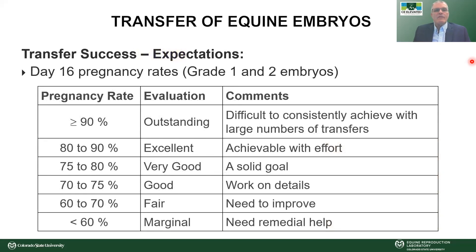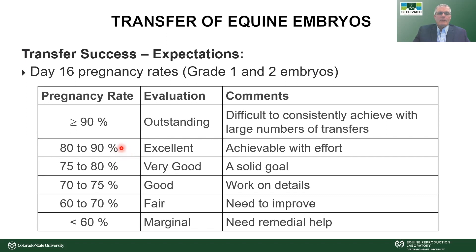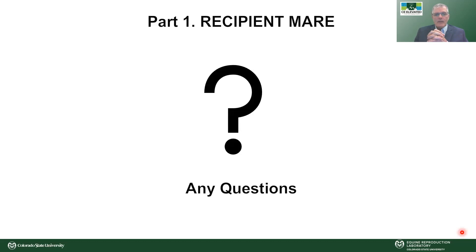What should we expect for transfer success rates — the day-16 pregnancy rate in the recipient mare? We'd all love to be greater than 80% for mares receiving a grade-one or grade-two embryo. Lower values of 60–70% likely reflect recipient quality and availability issues. One should shoot for 80%, though it's hard to achieve consistently. Achieving a consistent greater-than-90% transfer success rate in any larger embryo transfer program is very hard.